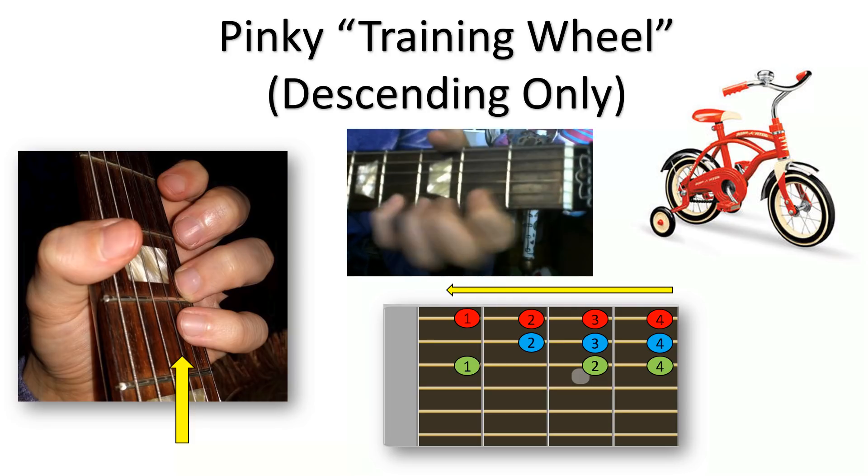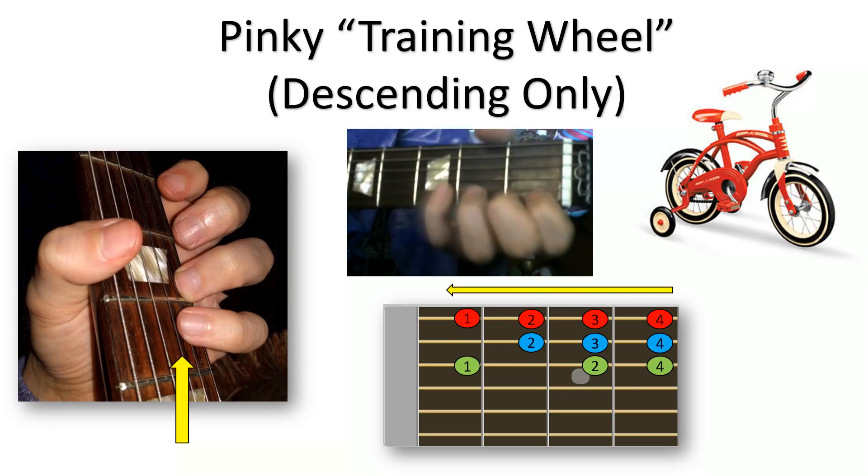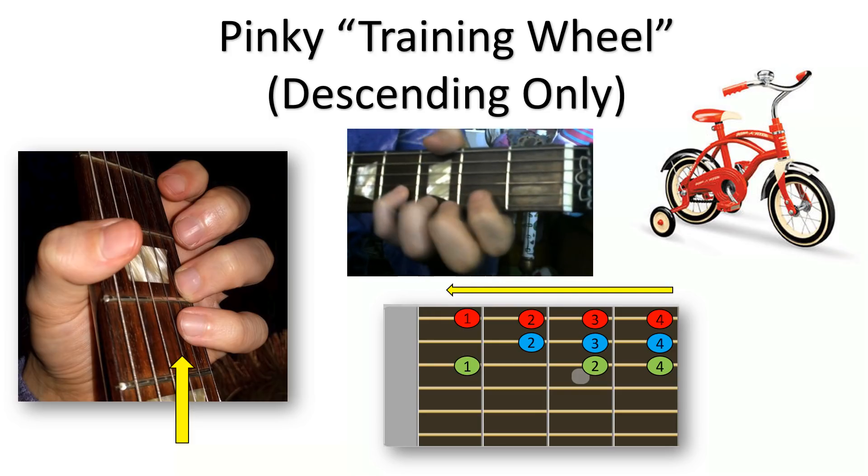The pinky training wheel is not intended to be permanent, rather a means to an end. By getting in the habit of moving the pinky up a string when not in use, it loses the urge to flail, rendering it more efficient.